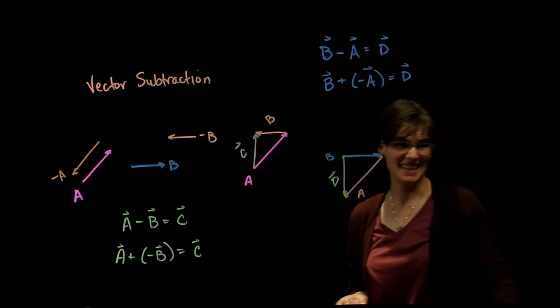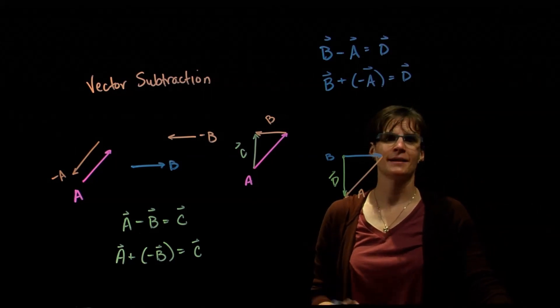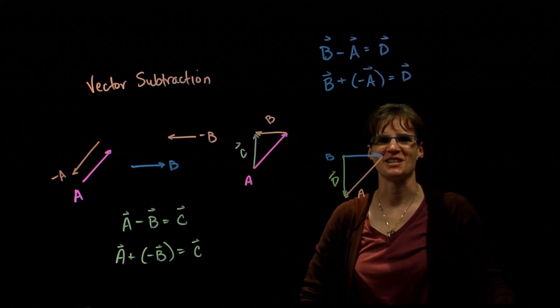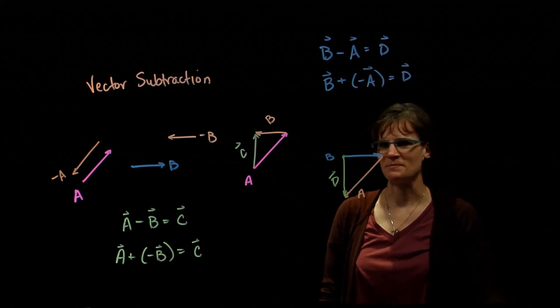So vector subtraction. We can just think about vector subtraction as addition of negative vectors. And it makes that pictorial representation much more straightforward. Good job.